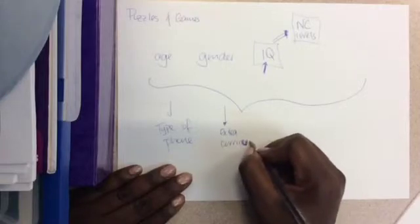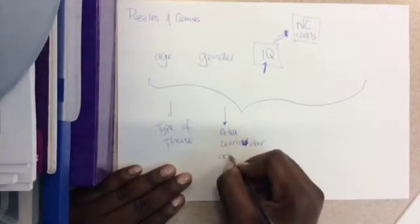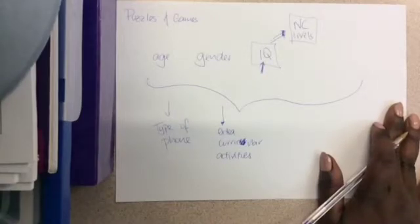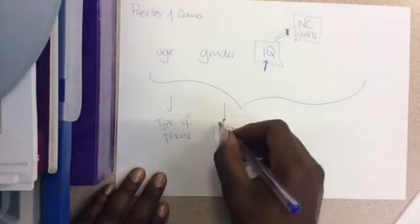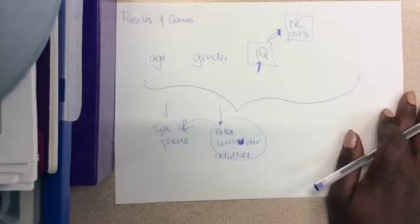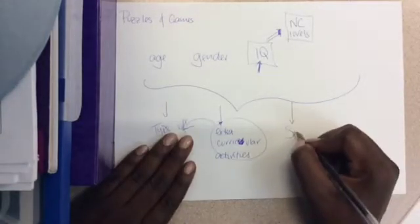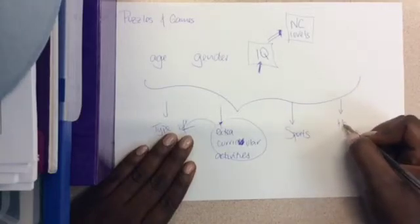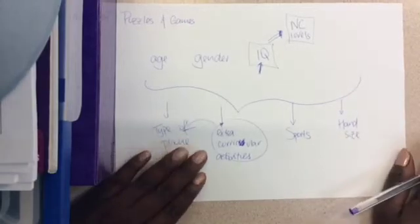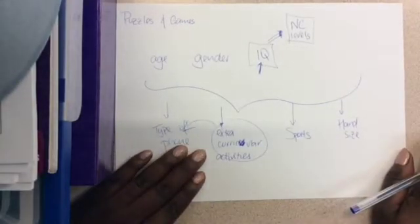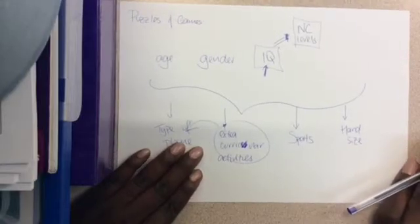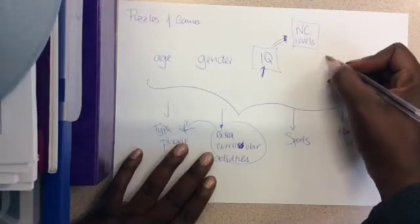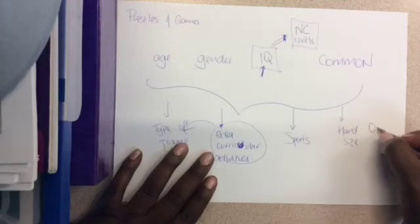Another one could maybe be how much extracurricular activities they do. For instance, if they don't do much activities outside of their work or their study, then they might have more free time in which they then go on their phone and play those games, thus giving themselves more practice. Another example is whether or not they do sports, which would build up their hand-eye coordination and their dexterity. Speaking of dexterity, another one is hand size. For instance, if the game is particularly fiddly and they have big clubbish hands, then it's going to be very difficult for them to properly have enough dexterity to properly manipulate the game.